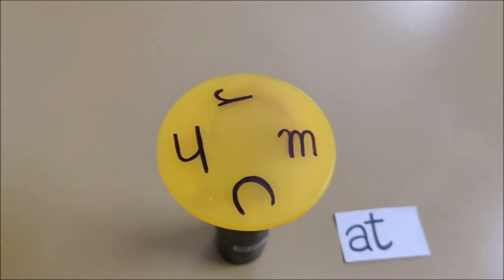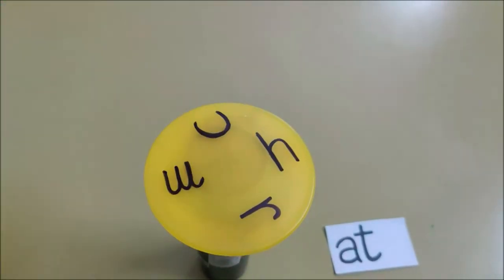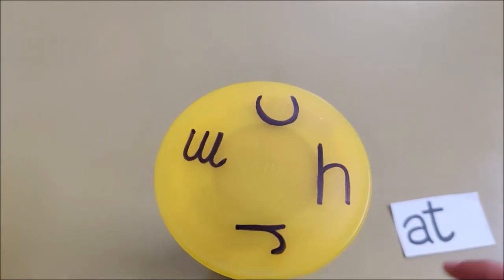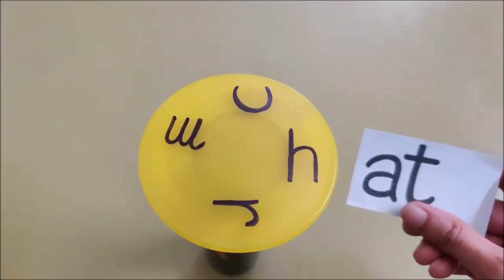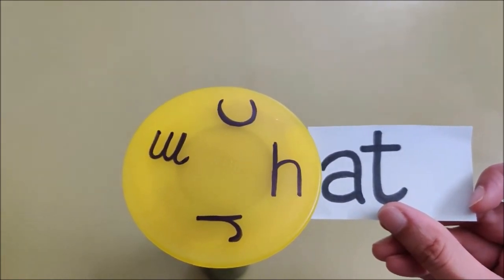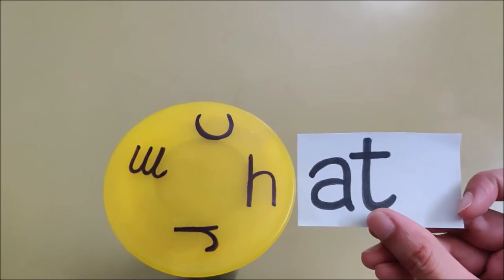Now I am going to spin it one more time. Spin. Now see, what letter have I got now, children? H. Now I am going to join my 'at' flash card and read the word. H, A, T, Hat.